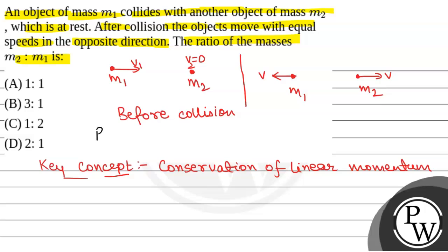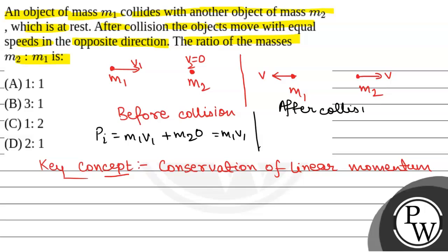Before collision, the linear momentum pi was m1·v1 plus m2 into 0, that is m1·v1. After collision, the linear momentum pf was m1 into (minus v) plus m2 into v, that is minus m1·v plus m2·v.